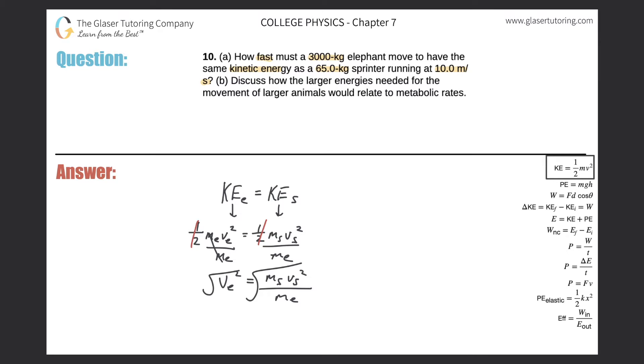And then to find just the velocity of the elephant, I've got to get rid of the square, so I take the square root. So the velocity of the elephant will equal the square root of the mass of the sprinter multiplied by the velocity of the sprinter squared, all divided by the mass of the elephant.